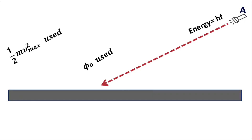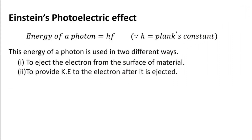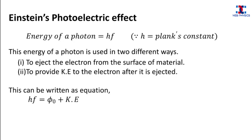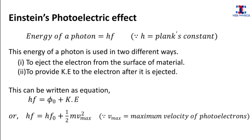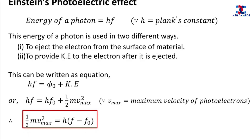This can be written as the equation: H×F = work function + kinetic energy. Substituting the values of work function and kinetic energy and simplifying, we get the following equation. This is the famous equation known as Einstein's photoelectric equation.